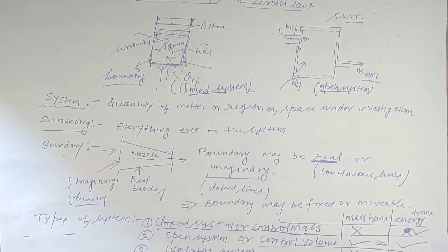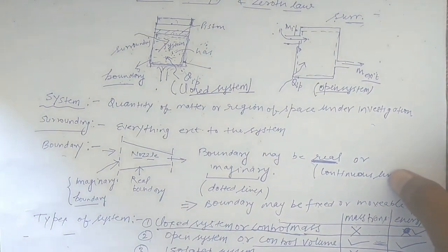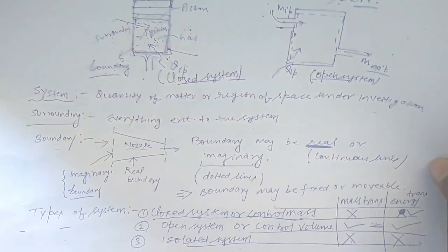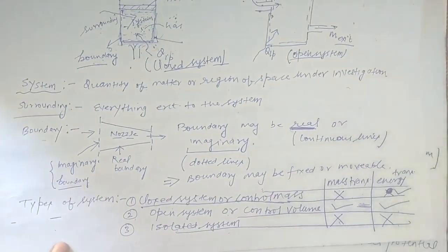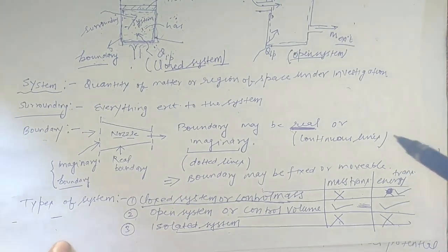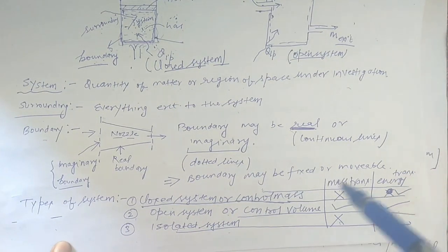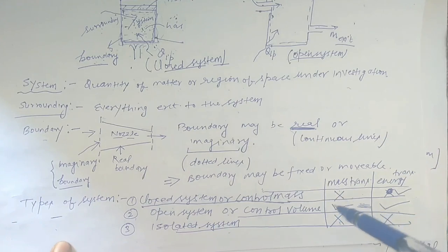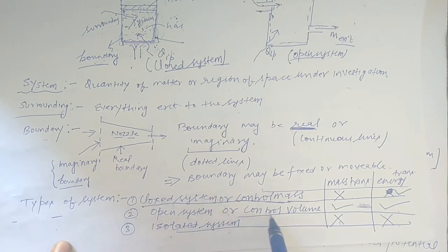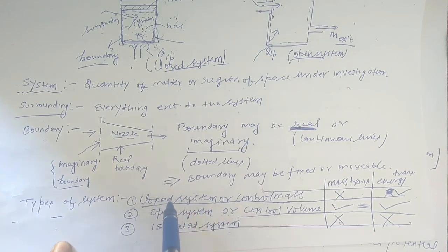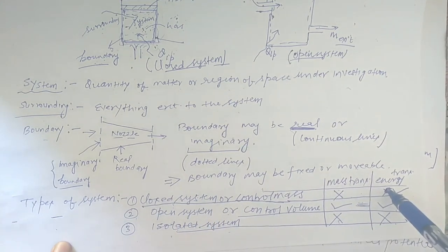Now let's discuss types of systems. Based on mass transfer and energy transfer, we can categorize a system into three types: closed system, open system, and isolated system. Closed system's other name is control mass; open system's other name is control volume; and the third is isolated system.